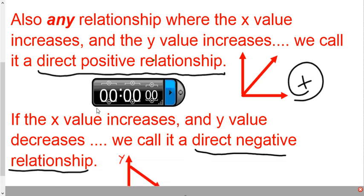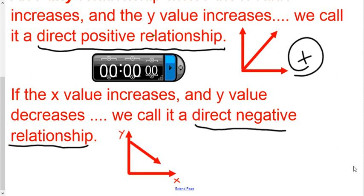What about a negative direct relationship? The x value is still going to increase — it gets bigger and bigger the farther right it goes — but the y value starts to decrease. We would say that's a negative direct relationship. When the x value was here, the y value was high. When my x value came over here, my y value went down — it keeps getting smaller and smaller. The x values keep getting bigger and bigger. So as my x values get bigger and my y values get smaller, it causes my line to go down. We call that a direct negative relationship.